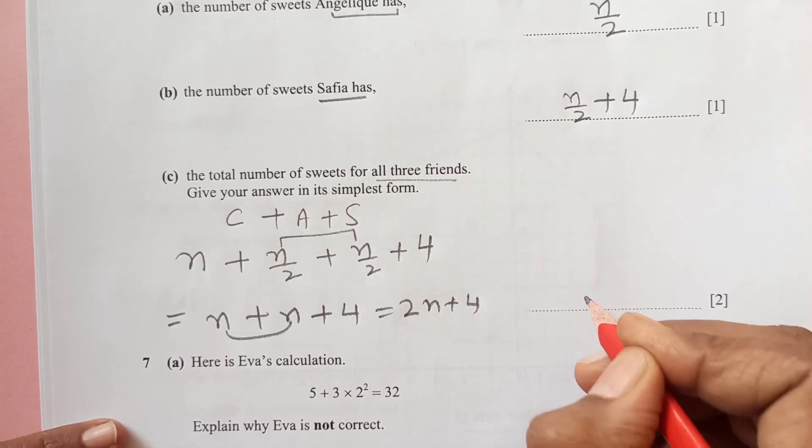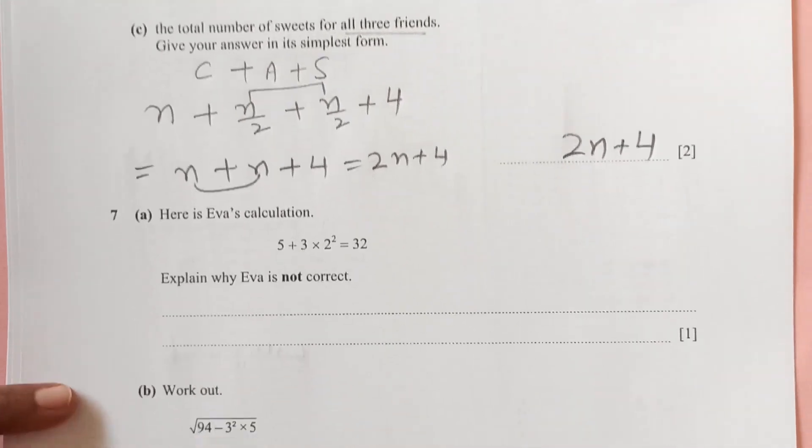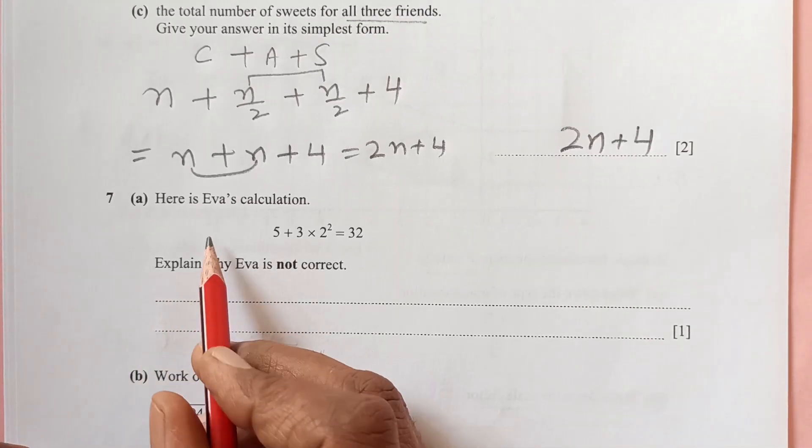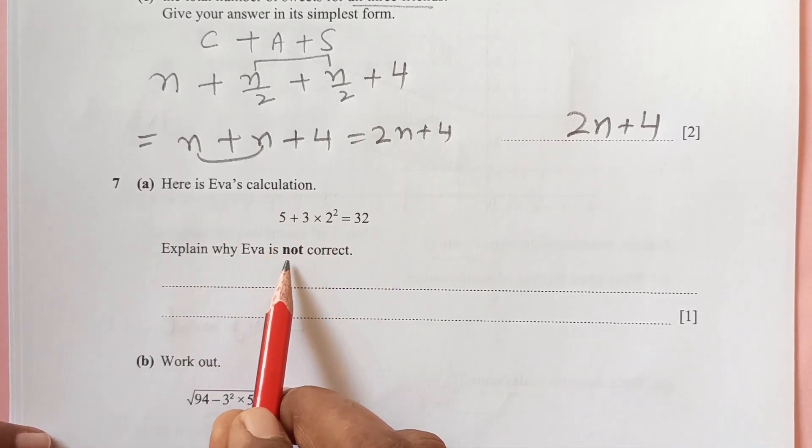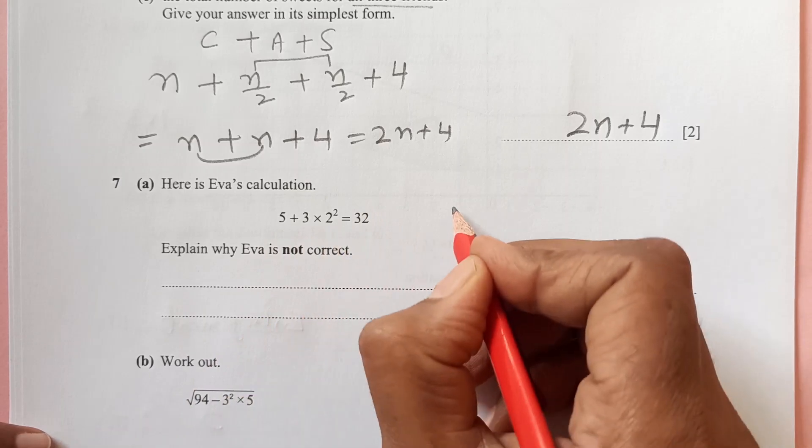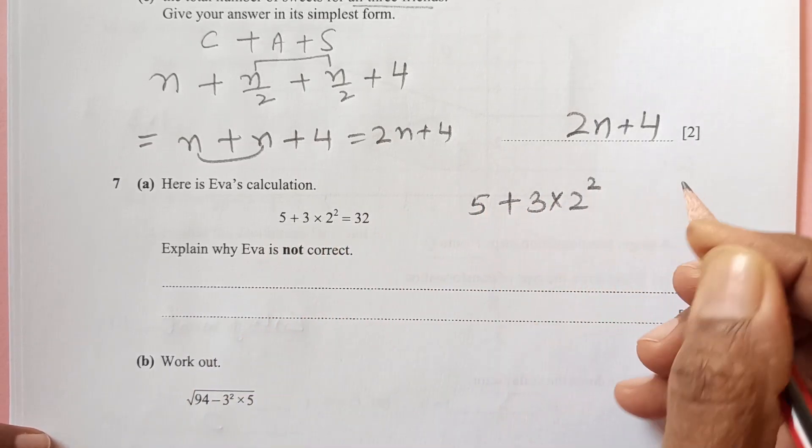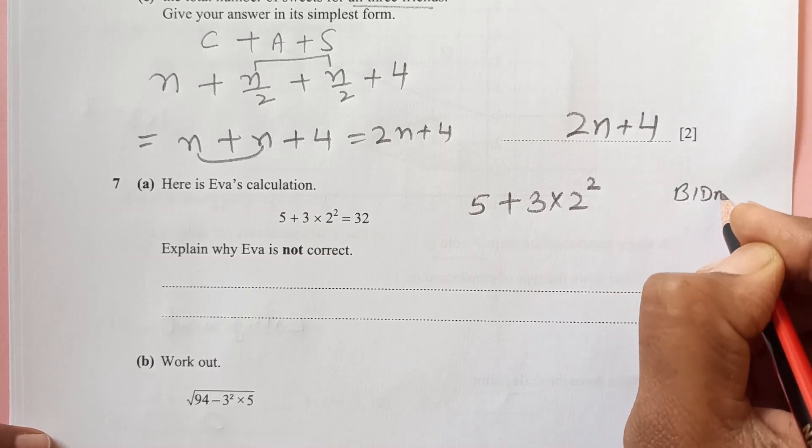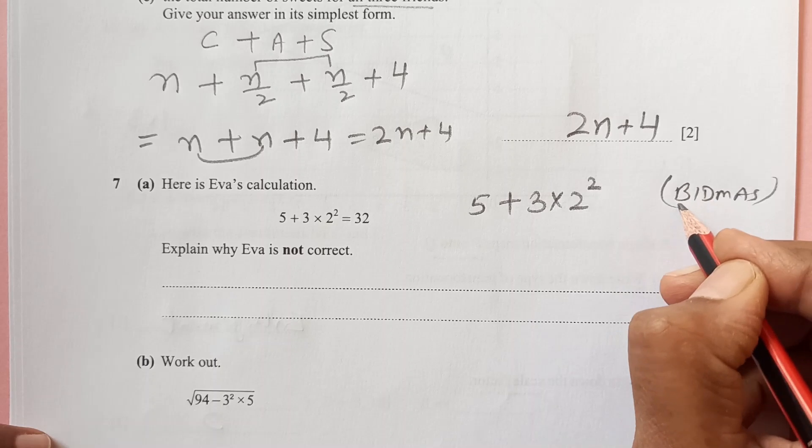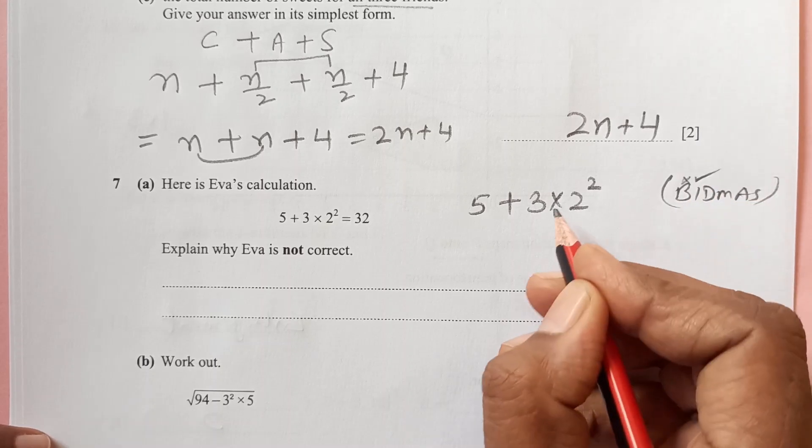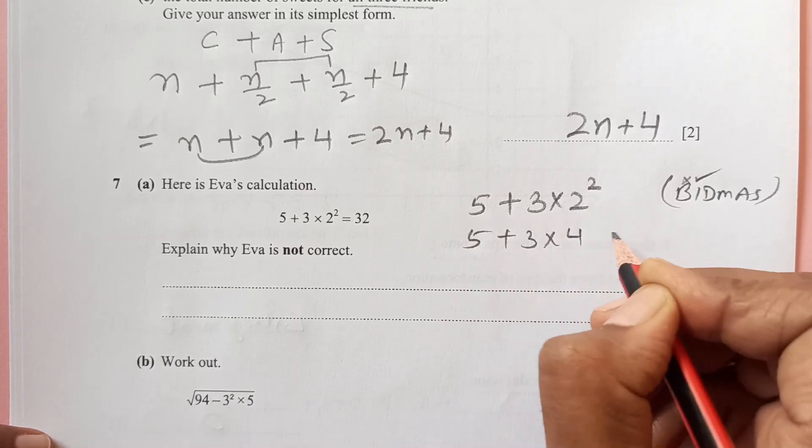Number seven: here is Eva's calculation. Explain why Eva is not correct. Let's see if she is correct or not. We have 5 plus 3 times 2 squared. BIDMAS rule: brackets are not there, indices are here, so 5 plus 3 times 2 times 2 is 4, so then multiplication, 4 times 3 is 12.